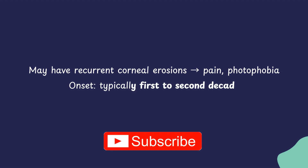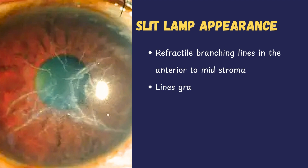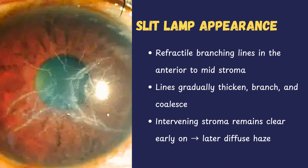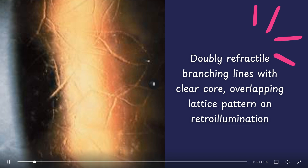On slit lamp examination, we will see refractile branching lines in the anterior and mid stroma. As the disease progresses, these lines may thicken, branch further, and merge together. In the early stages, the stroma between the lattices often remains clearer. This picture shows the characteristic doubly refractile branching lines with a clear core and overlapping lattice pattern under retro-illumination.